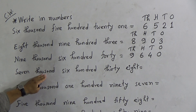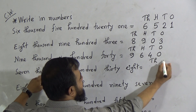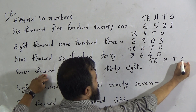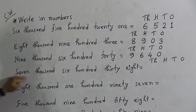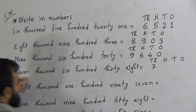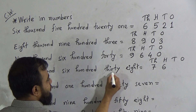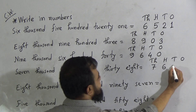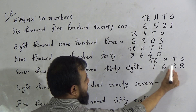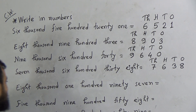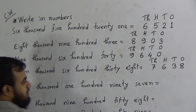The next number is 7638. The biggest place value is thousands, so we write: Thousands, Hundreds, Tens, Ones. Seven thousand means we write 7 in the thousands place. Six hundred means we write 6 in the hundreds place. For 38, we write 3 in the tens place (for 30) and 8 in the ones place. So 7638 is written as 7 | 6 | 3 | 8.